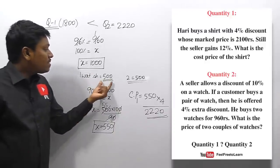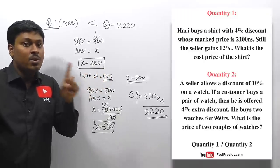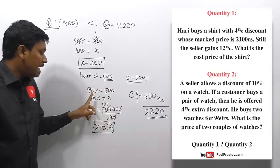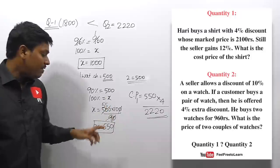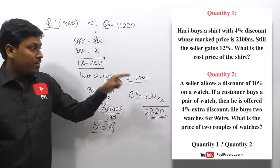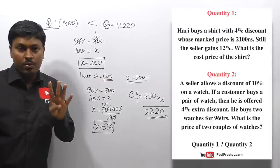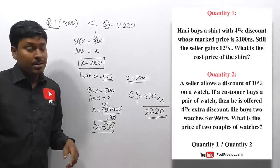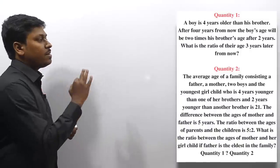To recap quantity two: buying two watches for ₹960 with 4% extra discount means the marked price of two watches is ₹1000 (₹500 each). With the single-watch 10% discount, marked price per watch is ₹550, and four watches (two couples) = ₹2220. Quantity two is greater than quantity one.